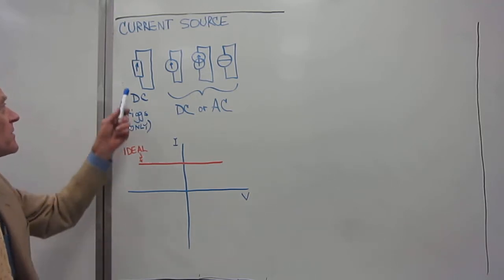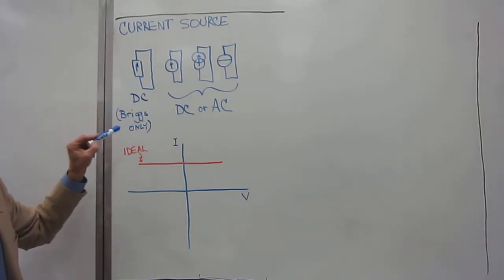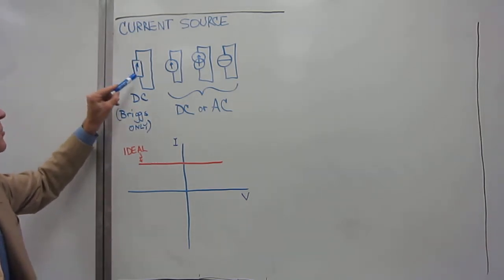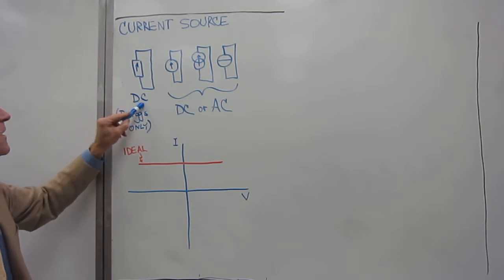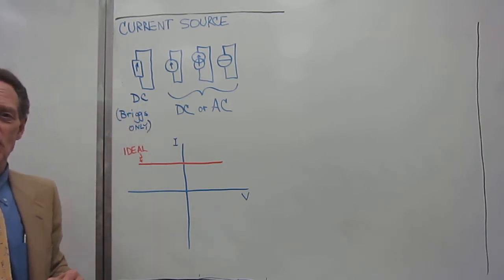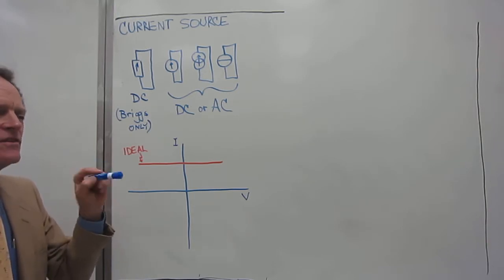Looking at the symbols for current source, I use in particular, this is just me, if I want to show a current source, it's going to be a rectangle with an arrow inside it if it's a DC current source, if it's a constant current source. It does not change.